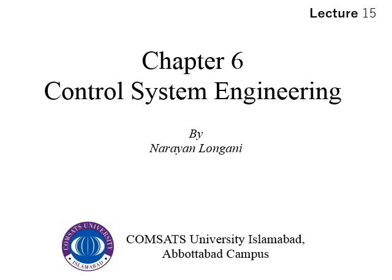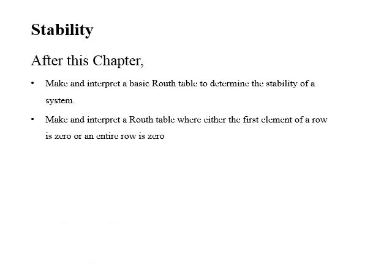Welcome to the 15th online class of control system engineering. Today we will start chapter 6, which is about stability of a system. In this chapter we will study how to find stability of a system, ranging from first-order systems to higher-order systems. After this chapter you will be able to find stability using the Routh table, learn how to make the Routh table, and interpret the results for various cases like when the first element is zero or a row of zeros occurs.